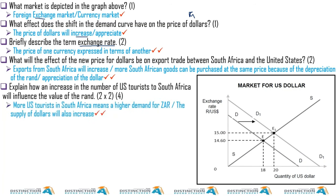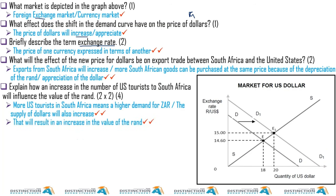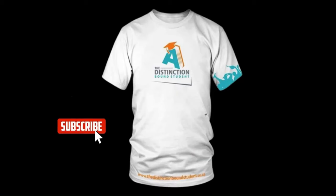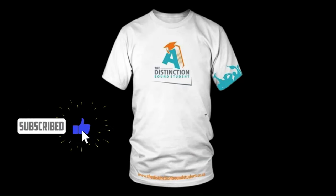How will an increase in the number of US tourists to South Africa influence the value of the rand? It will appreciate — as simple as that. More US tourists in South Africa means a higher demand for ZAR; the supply of dollars will increase, and eventually the rand will appreciate, resulting in an increase in the value of the rand.